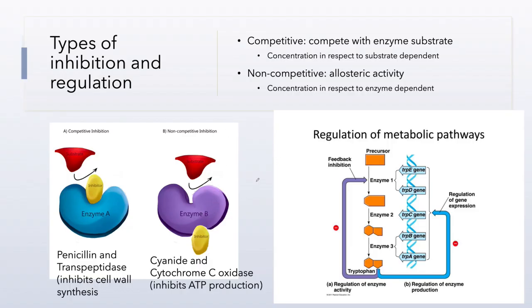Let's take a look at inhibition. Temperature and pH can denature or cause changes in enzymatic function, but inhibitors are really the big key. In competitive inhibition, we inhibit an enzyme by competing with the actual substrate — many medications can do this. The example here is penicillin, an antibiotic effective against gram-positive organisms. Penicillin competes with the substrate the cell would normally use: normally the substrate would fit the enzyme transpeptidase, but instead penicillin binds to the transpeptidase active site and directly competes with the substrate.